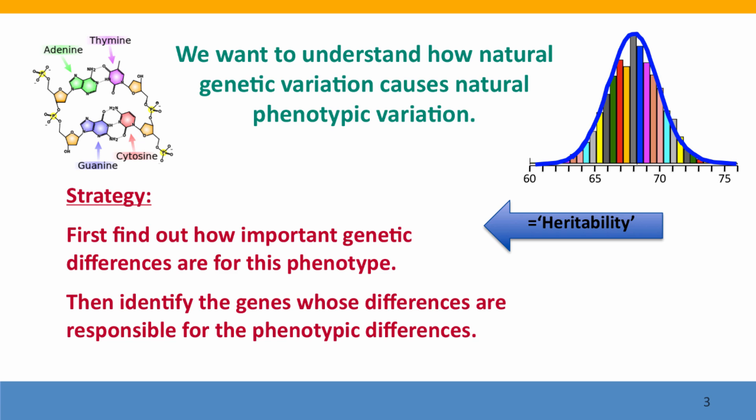What we want to understand is how natural genetic variation causes natural phenotypic variation. Before we can try to identify the genes that are responsible and figure out how they work, we need to first find out how important genetic differences are for a given phenotype. Once we know that genetic differences are important, then we can work to identify the genes responsible and try to understand how they work.